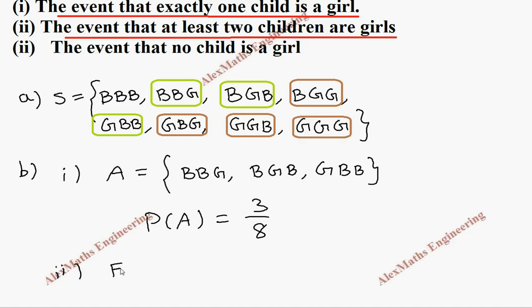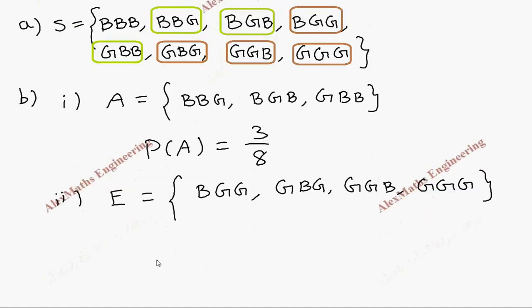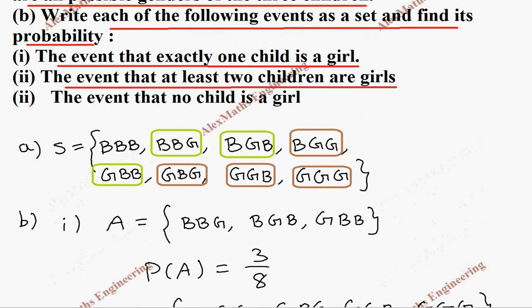Let's take that as event E, and we write BGG, GBG, sorry, GBG, then GGB, and GGG. So P(E) is totally four out of eight. After reducing, it is one by two.